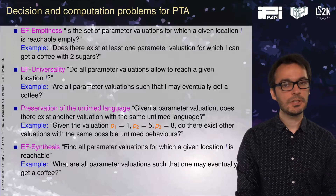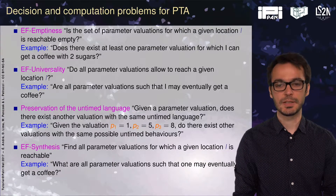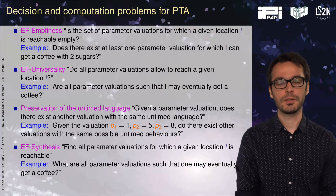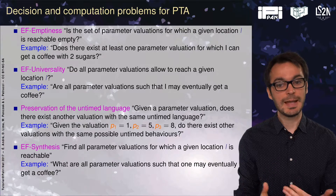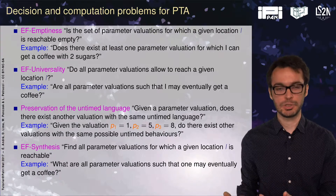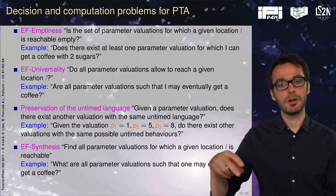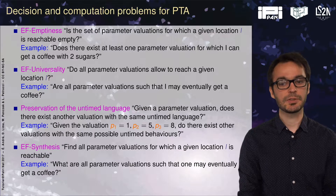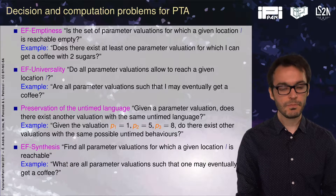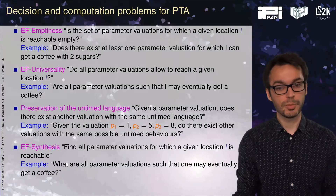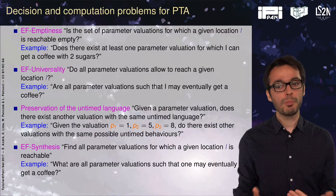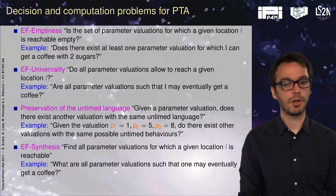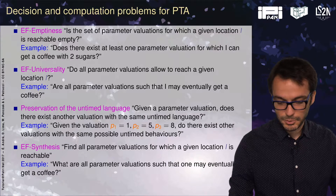A slightly different problem is the preservation of the untimed language, which is linked to robustness. As input we have a valuation; we know a parameter valuation and can study the behavior of the system for this valuation. The question is: can I find at least one other valuation with the same untimed language? Untimed language means untimed behavior — sets of sequences of actions. Finally, another problem — a computation problem — is EF synthesis: synthesize all parameter valuations for which a given location is reachable. For example: what are all parameter valuations such that one may eventually get a coffee?